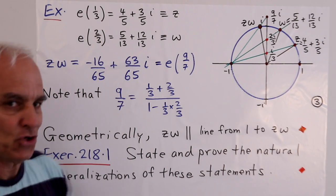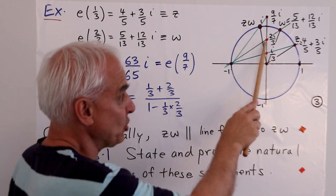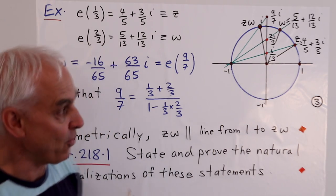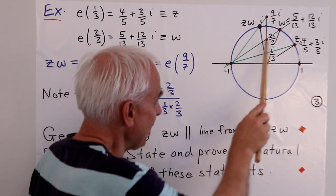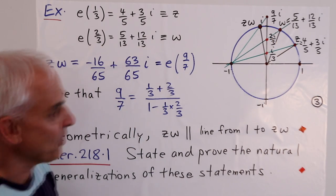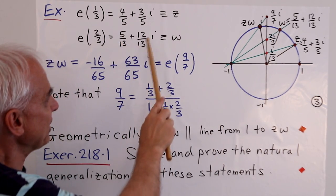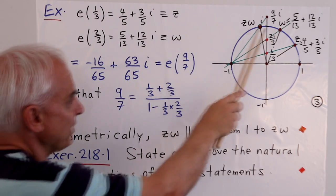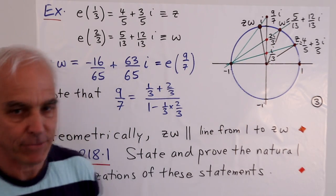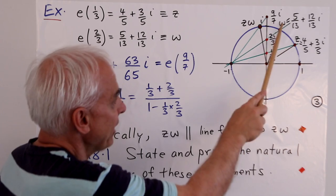The other one, we'll take e(2/3). So we'll take this point 2/3i on the y axis, draw the line, see where it intersects the unit circle, and we get the point 5/13 + 12/13i, we'll call that w. So we have z there and w there.